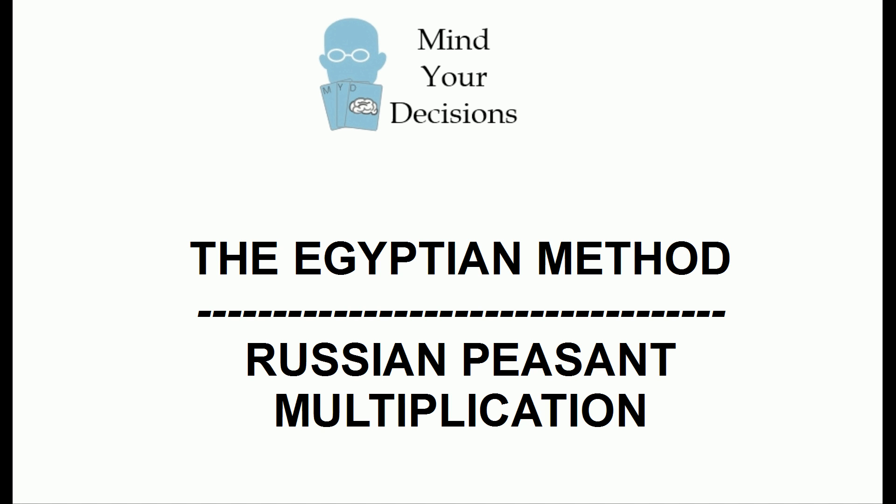Hi, this is Presh Talker. In this video I'm going to explain a weird way that you can multiply numbers known as the Egyptian method or Russian peasant multiplication.